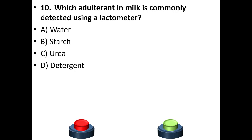Tenth question: Which adulterant in milk is commonly detected using a lactometer? A. Water. B. Starch. C. Urea. D. Detergent. The answer is option A: Water.